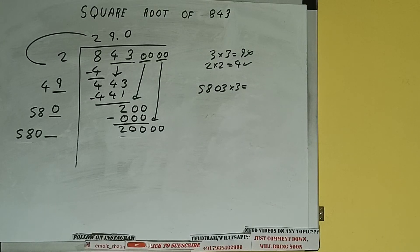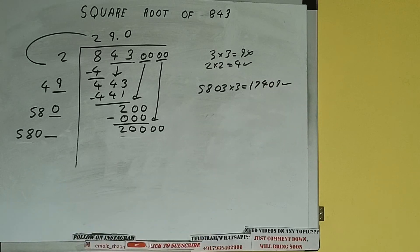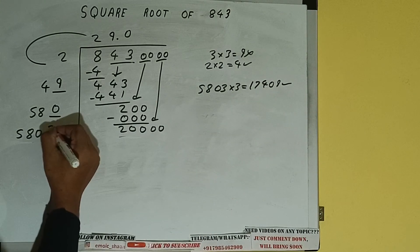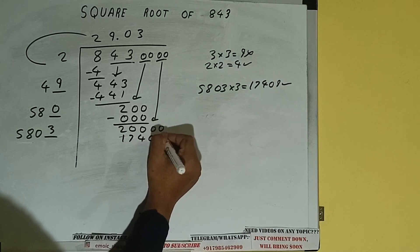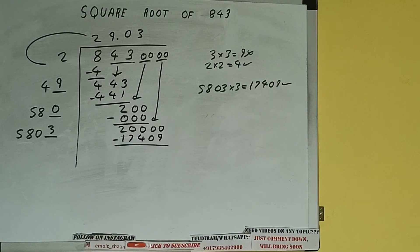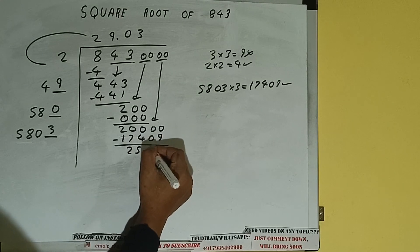And we'll be having 17,409 which is good to take. So 3 here and 3 here, 17,409 subtract. And we'll be left with 2591.